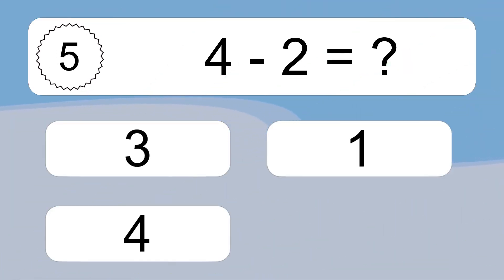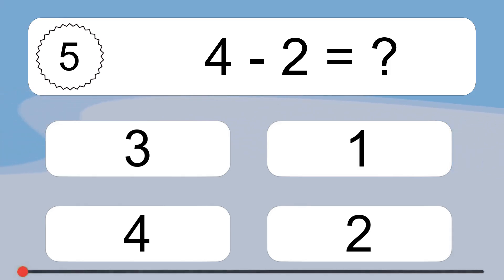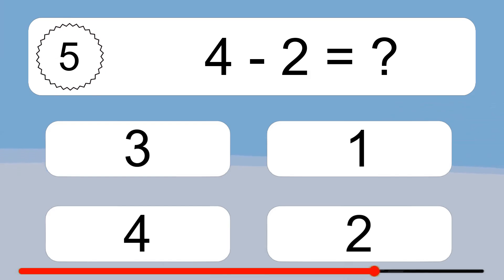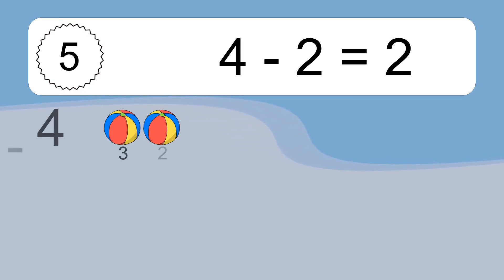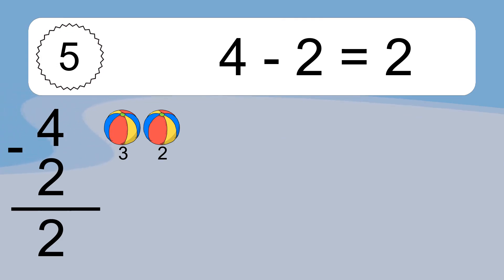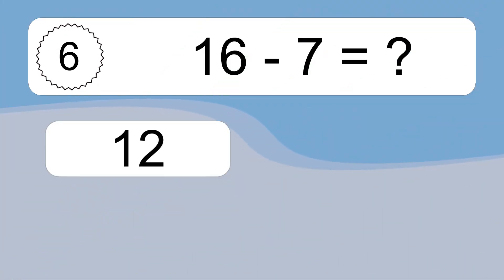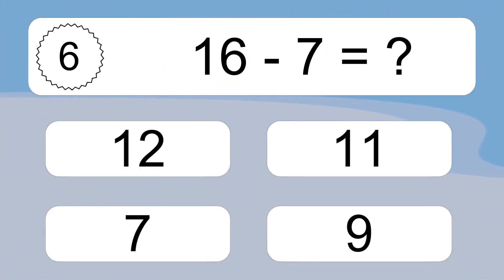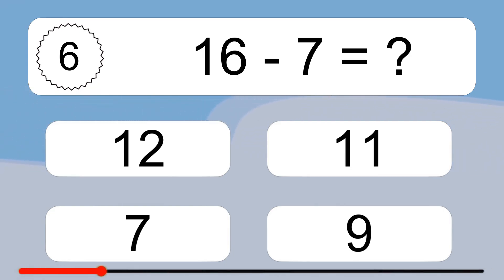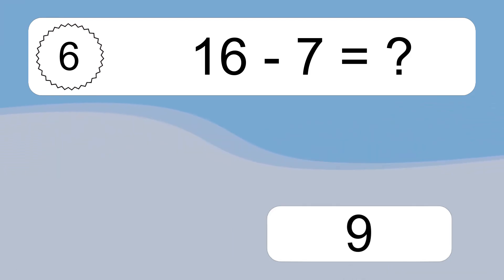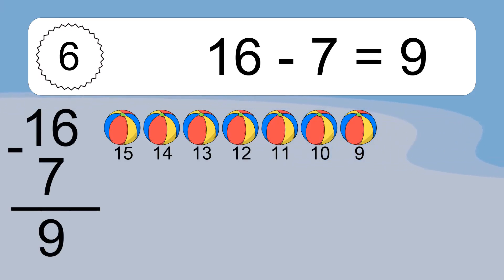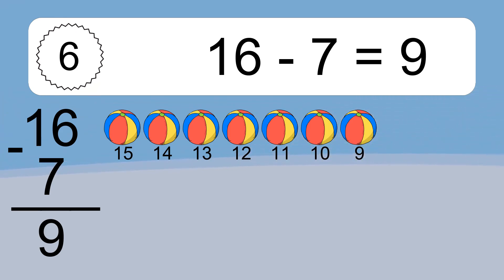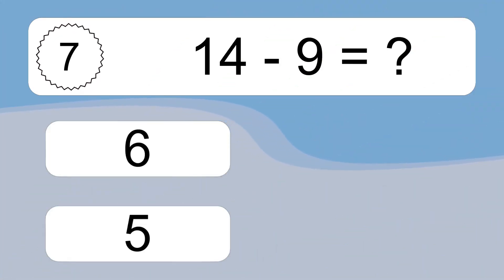16 minus 7 equals what? 4 minus 2 equals 2. Let's count it! 3, 2. 16 minus 7 equals what? 16 minus 7 equals 9. Let's count it! 15, 14, 13, 12, 11, 10, 9.